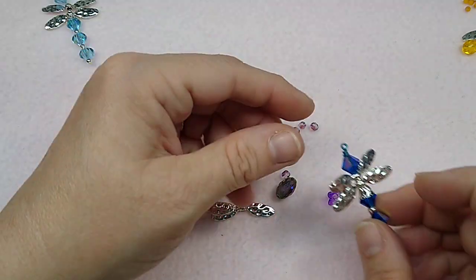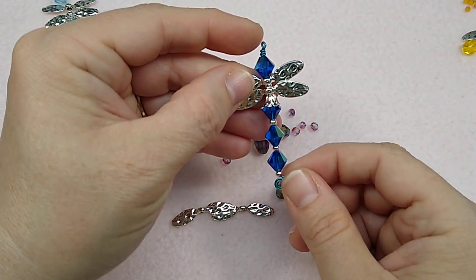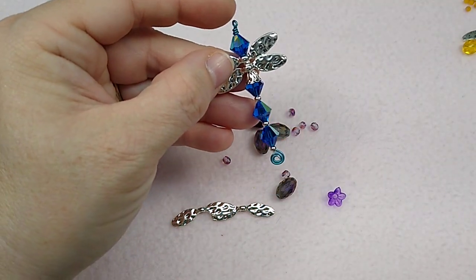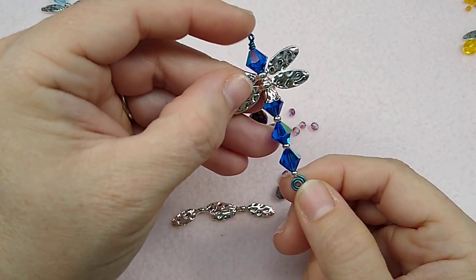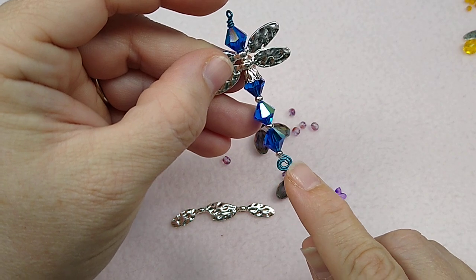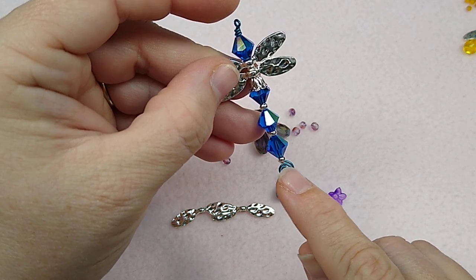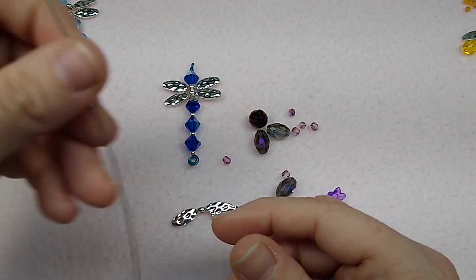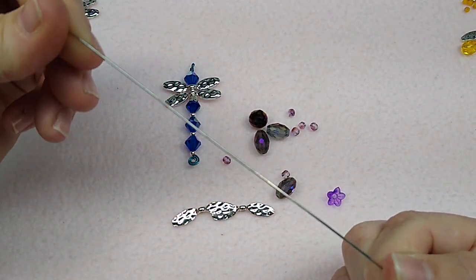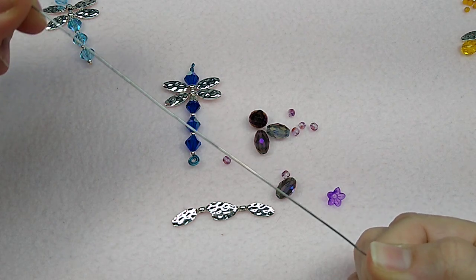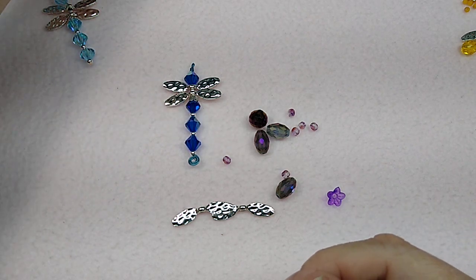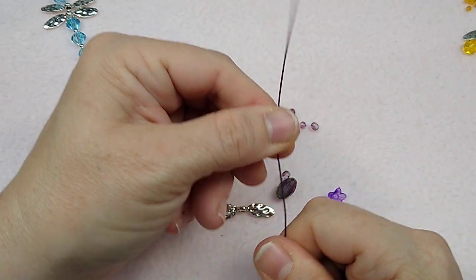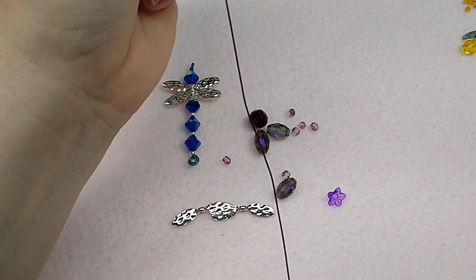If you want to make this version, you need a length of wire. Now this is artistic wire. This is coated in like a plastic coating on it. So it doesn't really matter what kind of wire you use. For this one over here, I'm going to use this is like 20 gauge silver wire. For this purple one we're getting ready to do, I'm going to use this. It's like maybe 22 gauge purple artistic wire.